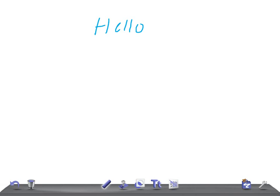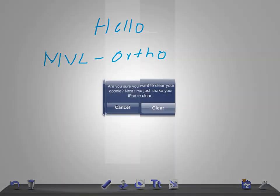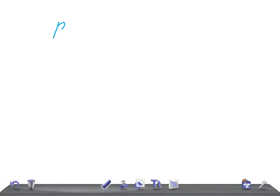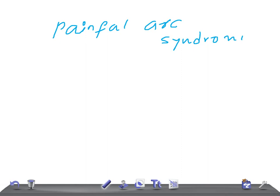This is a medical video lecture on orthopedics, and today I'm going to talk about painful arc syndrome. Painful arc syndrome is a pain in the shoulder and upper arm during the mid range of what we call glenohumeral abduction.